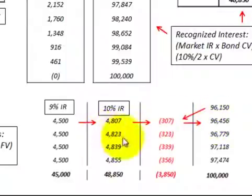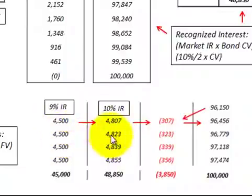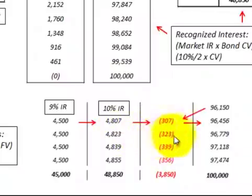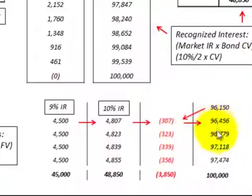We proceed in the same fashion for period two. We have the $4,500 payment received, then calculate new interest revenue as 5% times the new carrying value of $96,456, which gives us $4,823. We subtract the difference to get the new discount on bonds receivable amount, then add that to the previous carrying value to get the updated carrying value on the bond.